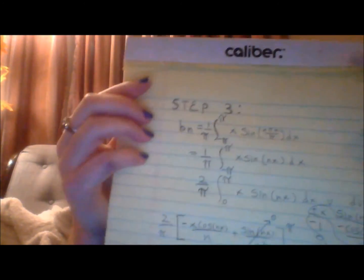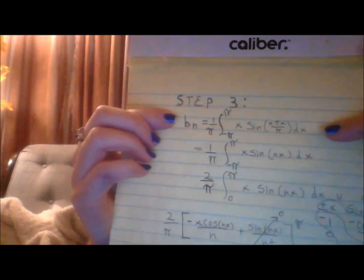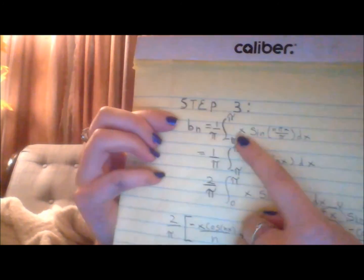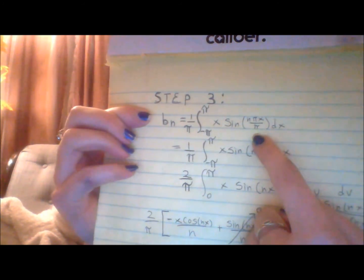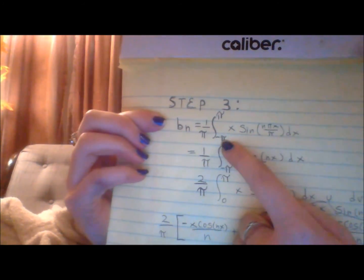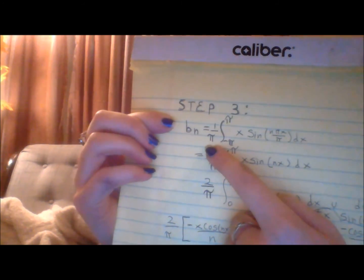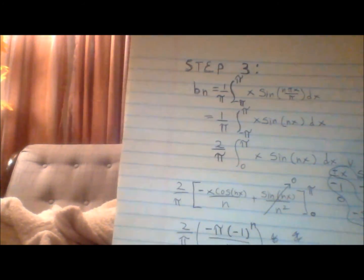The next step is just to remember our formula for b sub n and calculate that. So you take your b sub n formula and plug everything into it. You have your function sine of n pi x over p, where our p is pi. It's from negative p to p, and there's a 1 over p on the outside, just like the formula.